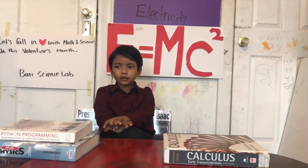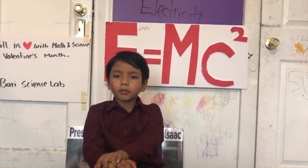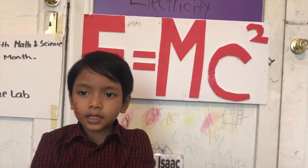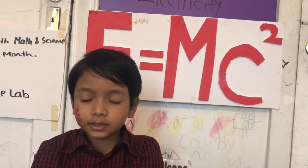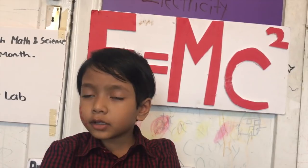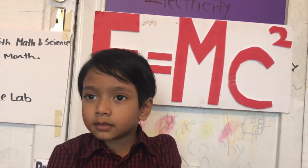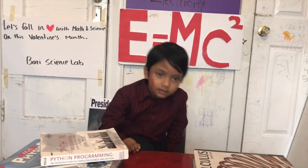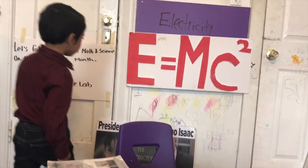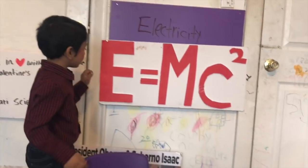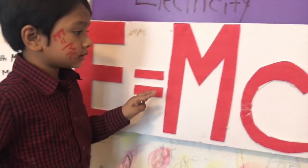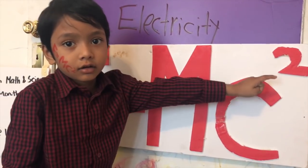E stands for energy, M stands for mass, and C stands for the speed of light — MC squared — which is 3 times 10 to the 8 meters per second. So this means energy is equal to mass times the speed of light squared.